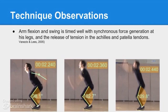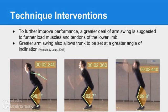This is evident as there is little knee extension and angular displacement until the arm swing begins to work in an upward direction. To further improve performance, a greater degree of arm swing is proposed to further load the muscles and tendons of the lower limb, primarily the Achilles and patellar tendons. Furthermore, a greater arm swing will allow the trunk to be set at a greater angle of inclination, and thus be able to perform more work as it has a greater capacity for extension, further contributing to an increase in take-off velocity.